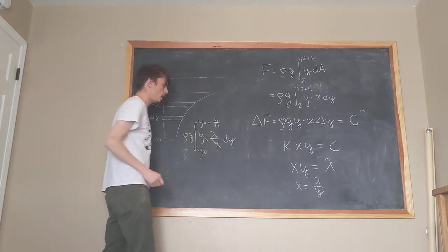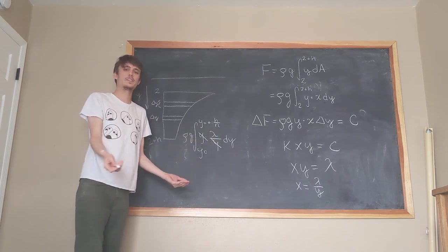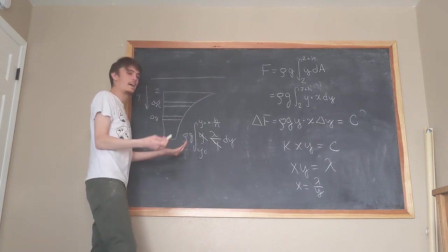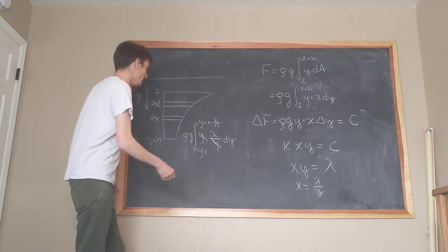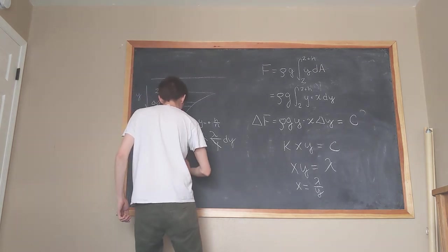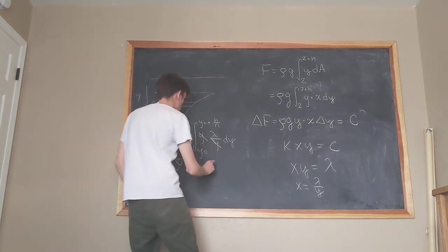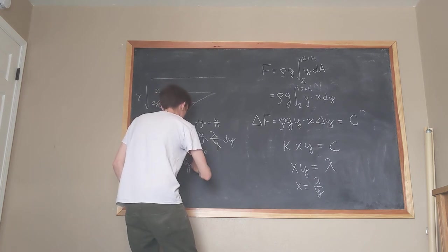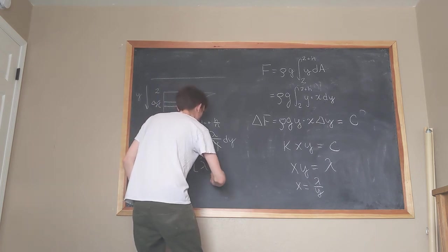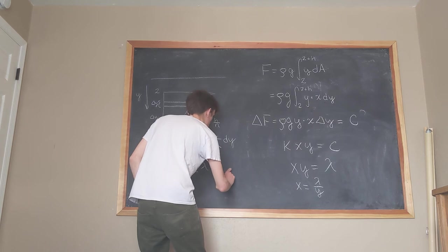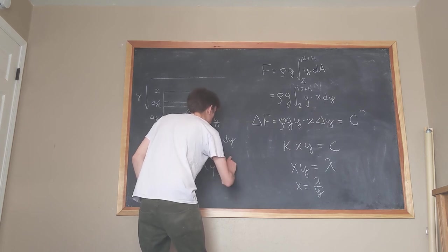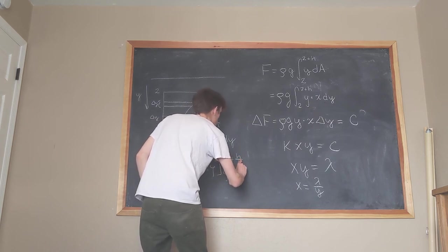Okay, and what are we going to get? Well, we get y cancels with y, so this is just the integral of a constant. Easy! Oh my god, it's just the area of a rectangle. So this is going to equal ρ times g times λy evaluated from y₀ up to y₀ plus h over n.